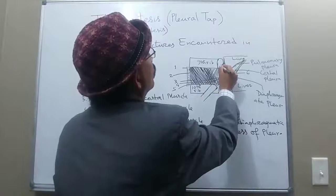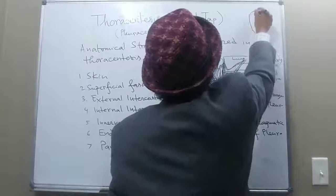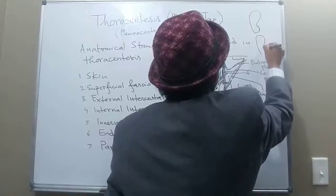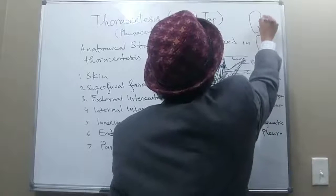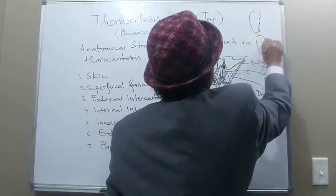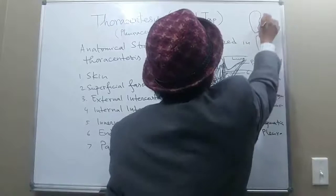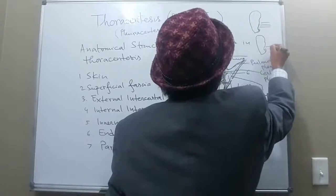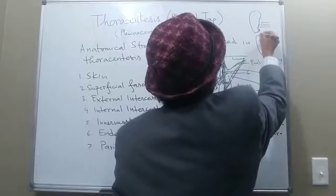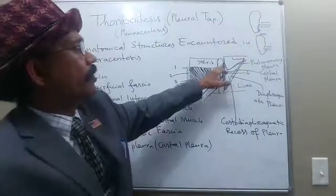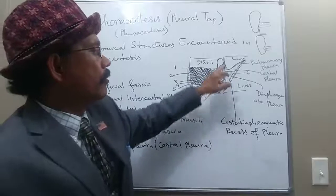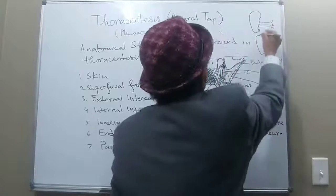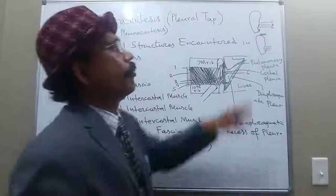In the costal groove between two ribs, we find the neurovascular bundle — containing the intercostal vein, intercostal artery, and intercostal nerve — running in the costal groove along the inferior border of the upper rib. There are also collateral branches of these vessels along the superior border of the lower rib.